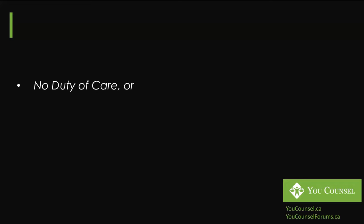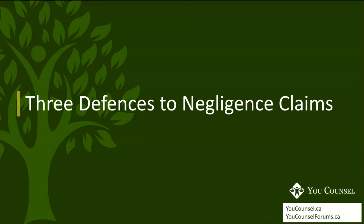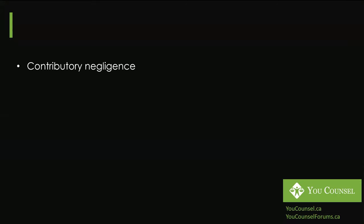The best defenses for a negligence claim are two. Number one, you owe no duty of care to the plaintiff — if you can show that, you're off the hook. Or you can show that the specific act alleged as negligent was not negligent at all. If either of these can be shown, you will be off the hook. But if that doesn't work, there are three further defenses: Contributory Negligence, Voluntary Assumption of Risk, and Inevitable Accident.